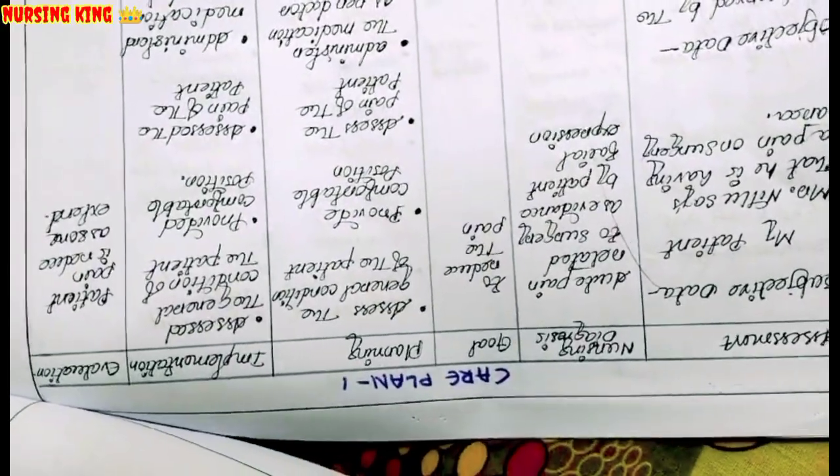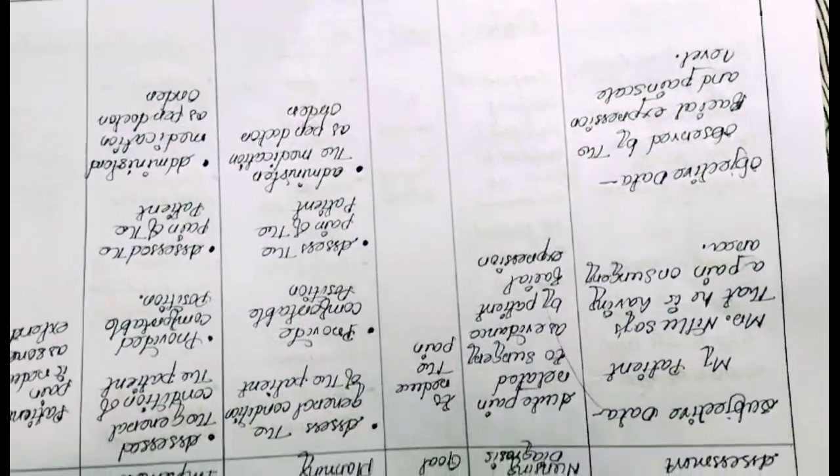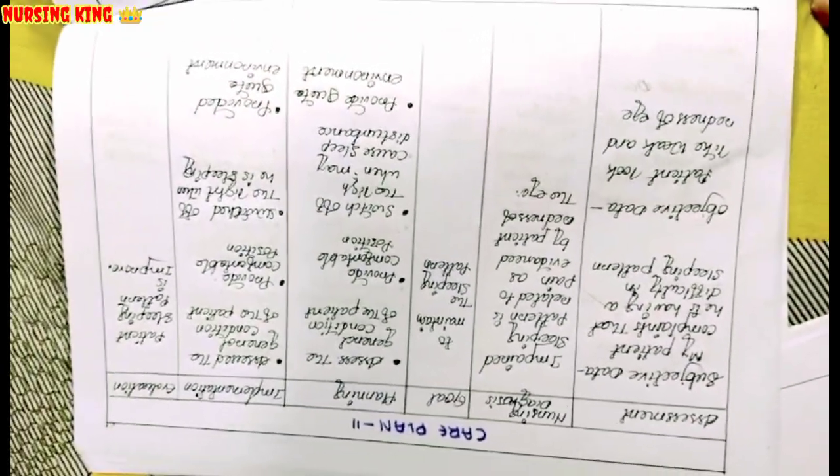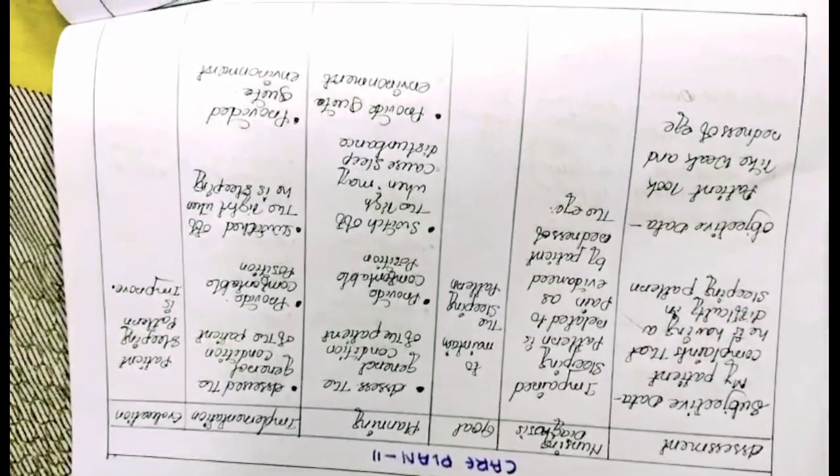Then comes the surgical management, which means pre-operative care plan and post-operative care plan. You have to write post-operative management care and pre-operative management care - minimum two care plans you have to write there.